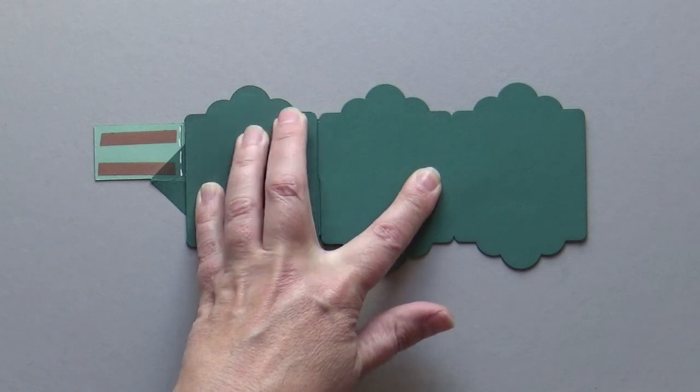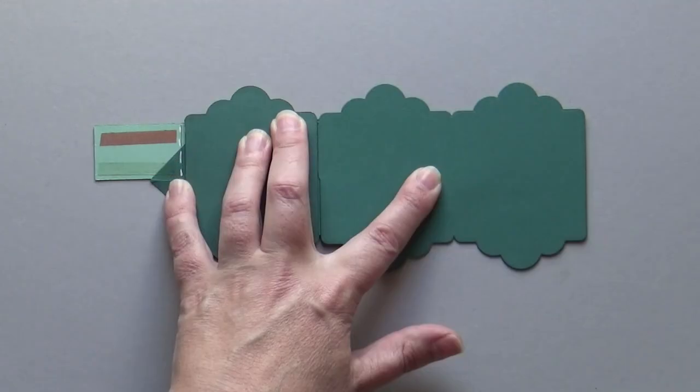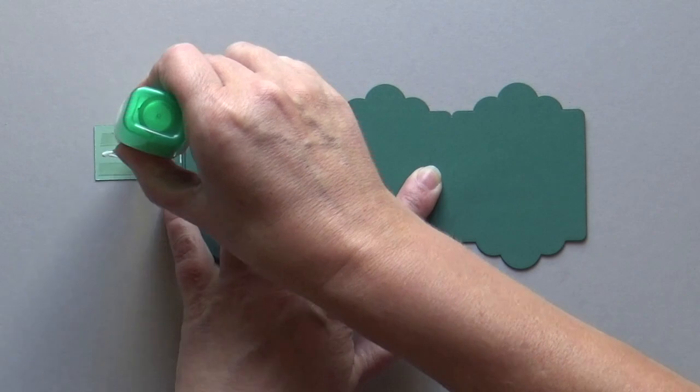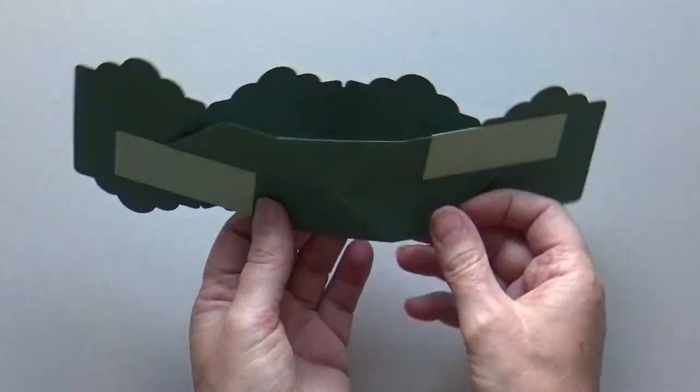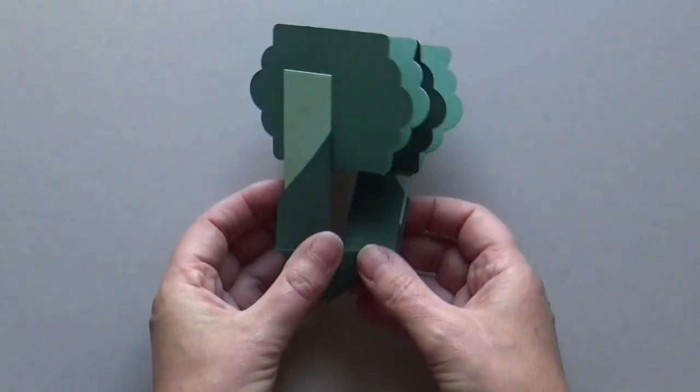Unfold the right side. Repeat on the left side. The twist and pop system is now ready.